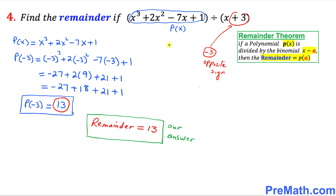Finally, here is our last example — I have already worked this one out for you. The first step: look at the dividend and call it p(x) = x³ + 2x² − 7x + 1. The next step: look at positive 3 in the divisor and change its sign to negative 3. So wherever you see x, replace it with −3. We get p(−3) = 13, and 13 is our remainder.